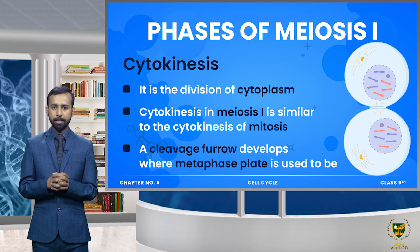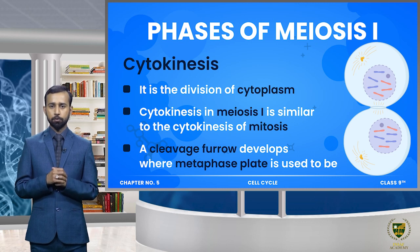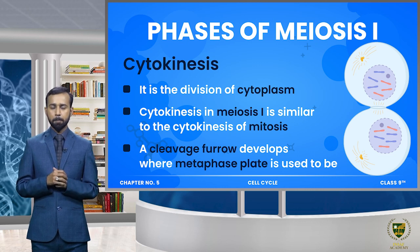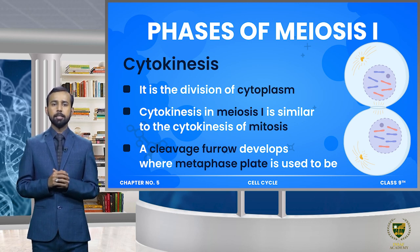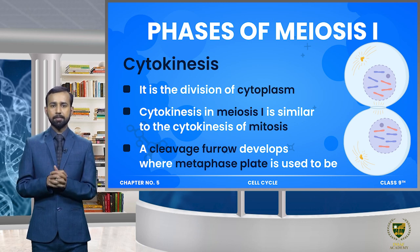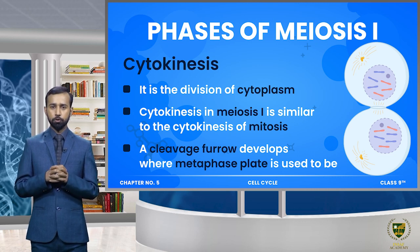Nuclear envelope دوبارہ سے بن گئی، chromosomes دوبارہ سے loose thread-like chromatin form میں shift ہو گئے۔ Next phase جو آئے گی وہ ہے cytokinesis - یعنی اب cell کے cytoplasm نے divide کرنا ہے۔ Meiosis 1 میں cytokinesis کا process mitosis کی cytokinesis سے similar ہے - اس میں سب سے پہلے cell کی membrane میں ایک cleavage furrow develop ہوگی یعنی ایک depression create ہوگی۔ یہ cleavage furrow deep ہوتے ہوتے ایک cell کو two cells میں divide کر دے گی - یعنی cleavage furrow کی وجہ سے جو ایک parent cell تھا وہ two daughter cells میں divide ہو گیا۔